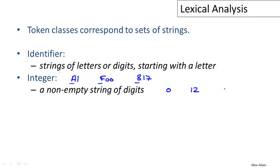This actually would admit some numbers you might not think of—things like 001 would be a valid representation of a number, or even 00 could be a valid integer according to this definition. Keywords are typically just a fixed set of reserved words. Here I've listed a few: else, if, begin, and so on.